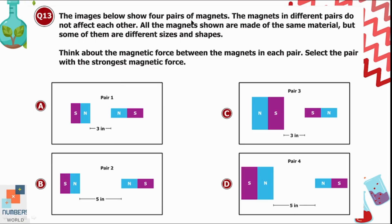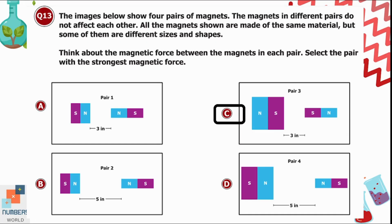Question 13: Four pairs of magnets are shown — same material but different sizes and shapes. Select the pair with the strongest magnetic force. In options B and D the distance between magnets is greater, so we avoid those. In option A the magnets are smaller than in option C. Option C is correct: larger magnets with less distance produce the strongest magnetic force.